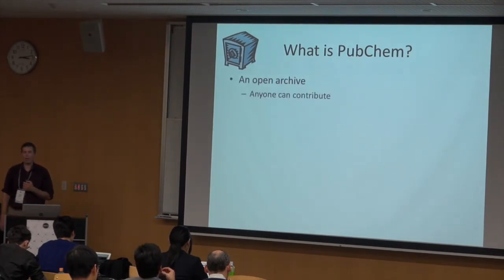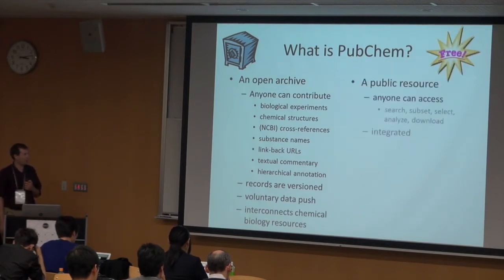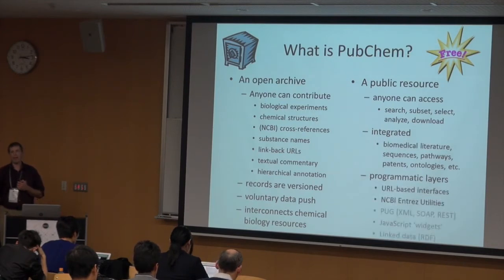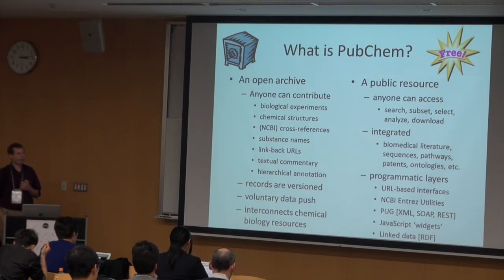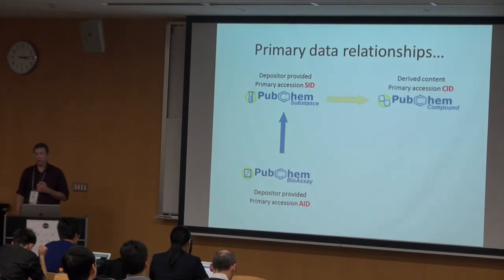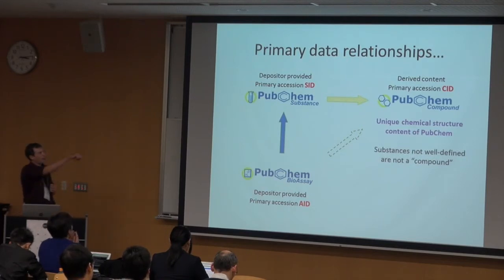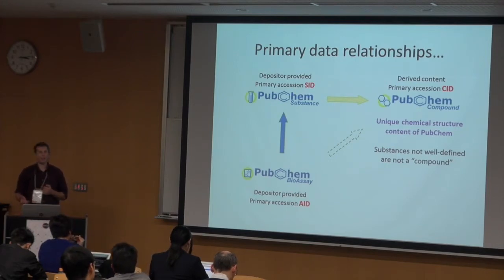If you want to think of PubChem, it's an online archive where you can contribute information: biological experiments, chemical structures, cross-references. PubChem aggregates information — people push their data in rather than us pulling it. We have a data transfer agreement, but we're also a public resource. We provide tools to search, subset, select, and analyze. We also have a derived database called PubChem Compound, where people get the unique set of chemicals.